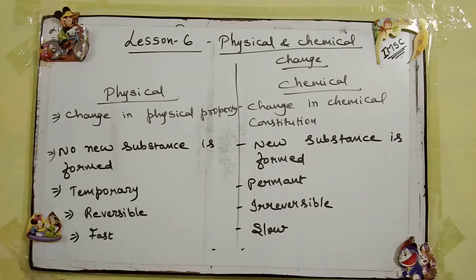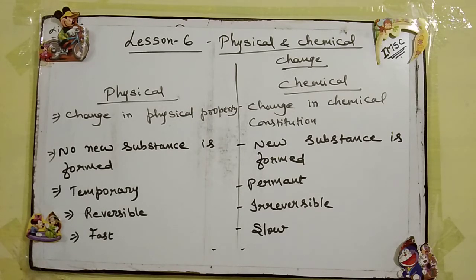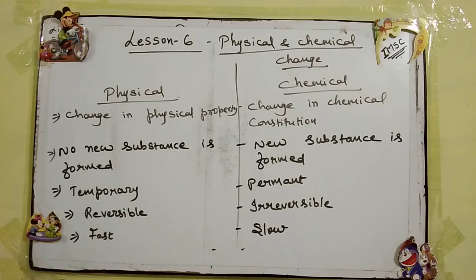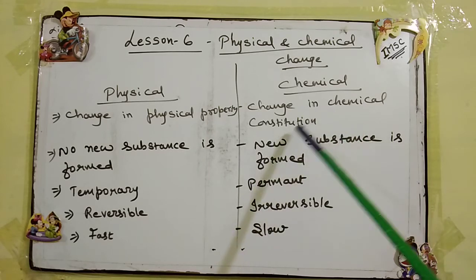First of all we will study about properties and comparison between physical and chemical change. What is physical change and what is chemical change? Physical change means it is the change in physical property. Physical property means ऐसी property जिसे हम देख के पता लगा सकें — property that we can observe. So the change that occurs due to physical property is known as physical change.